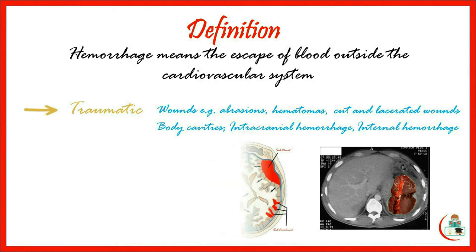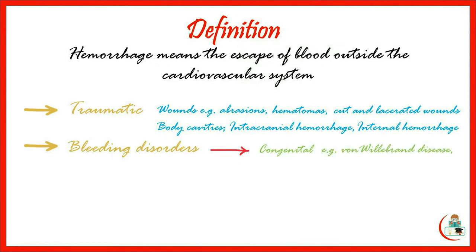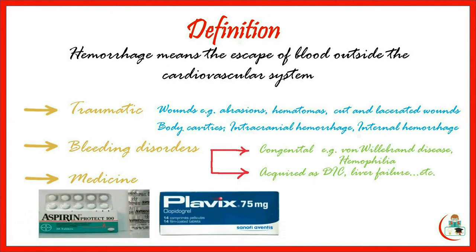Hemorrhage may also be due to medical diseases like bleeding disorders, which may be congenital — such as Von Willebrand's disease and hemophilia — or acquired, like DIC, liver failure, vitamin K deficiency, etc. Another cause of bleeding can be excess intake of medicines like antiplatelets such as aspirin or Plavix, anticoagulants injectable as heparin, or oral like warfarin.